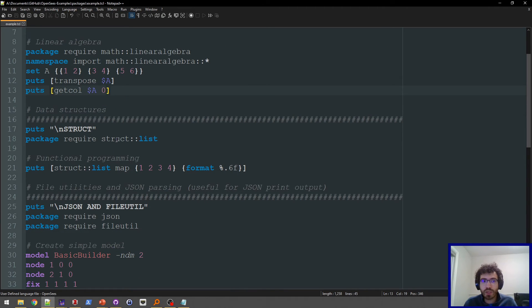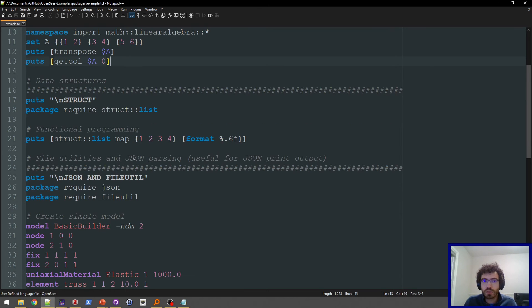There's also a bunch of things with data structures. Just as an example here, I'm using the struct list package. Within this, you can do some functional programming. So if you want to map the format command over a list, you can do that.